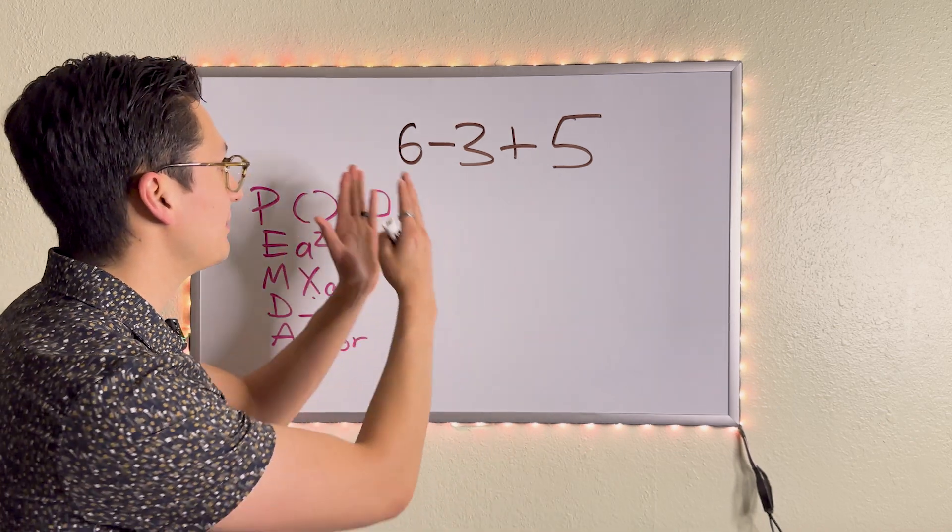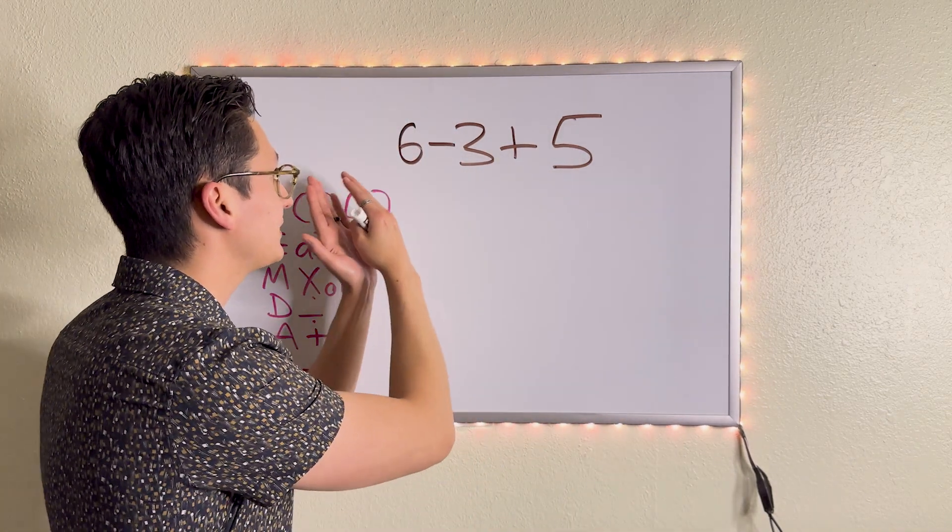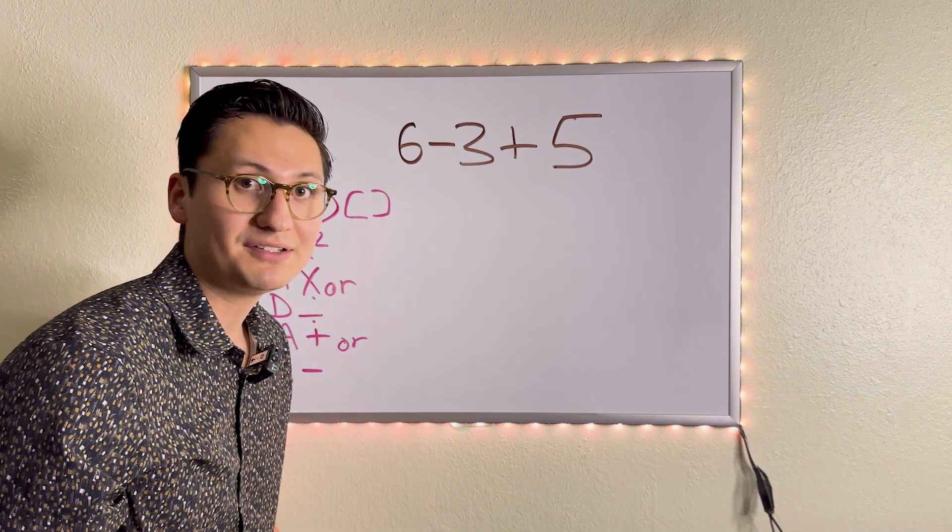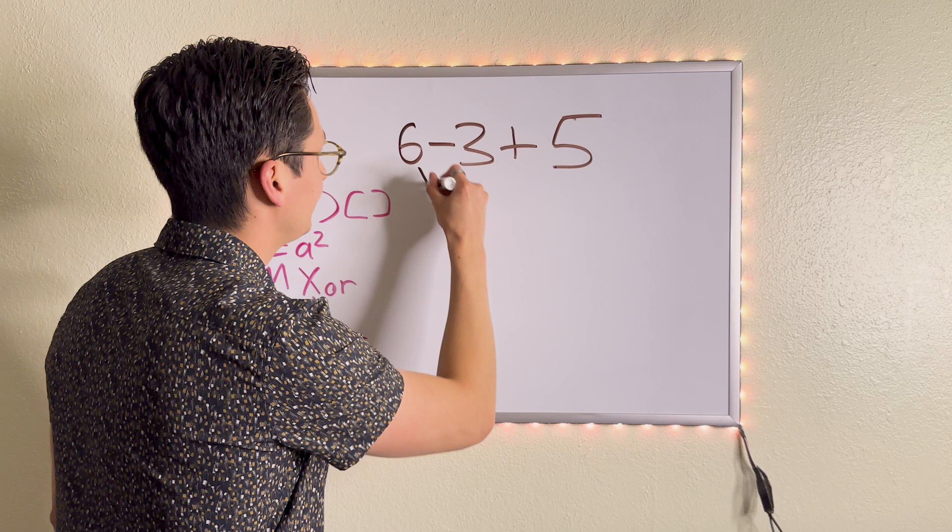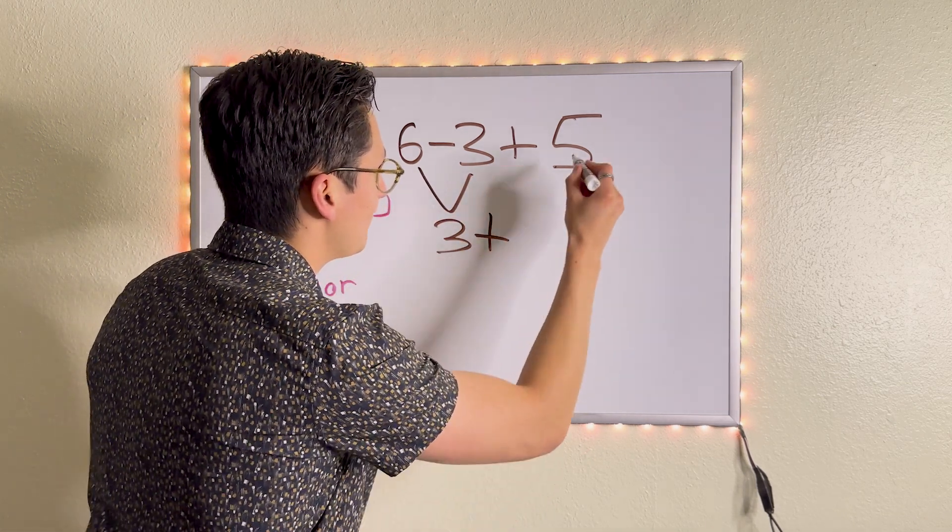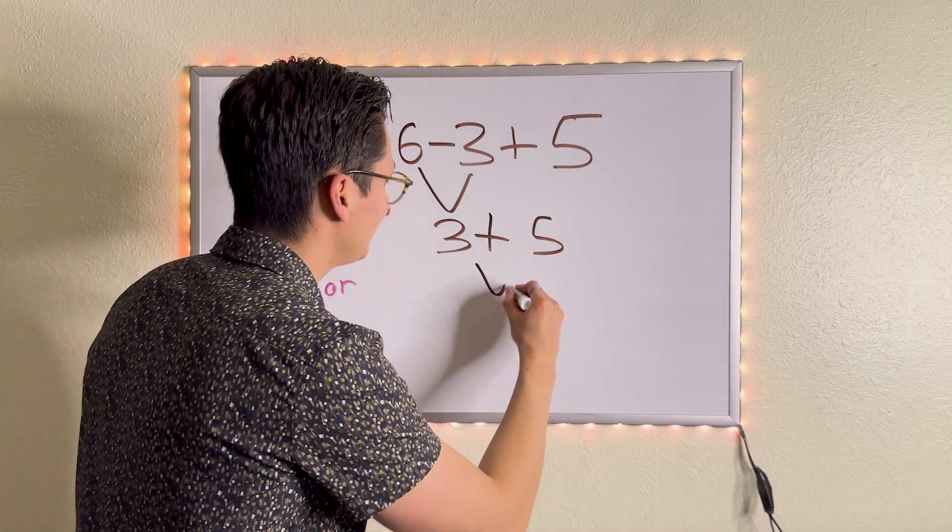It's like you're reading a book from left to right. Which one comes first from left to right? Well, subtraction, right? So we must subtract first. Six minus three is three. We bring down the plus sign. We bring down the five. Three plus five is eight.